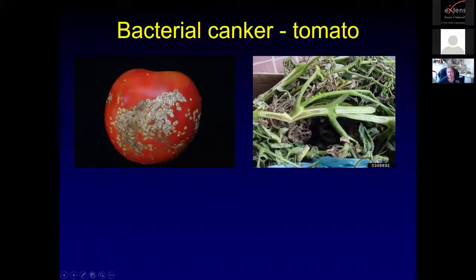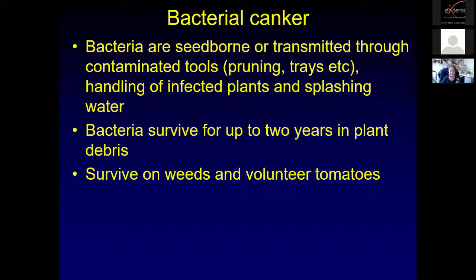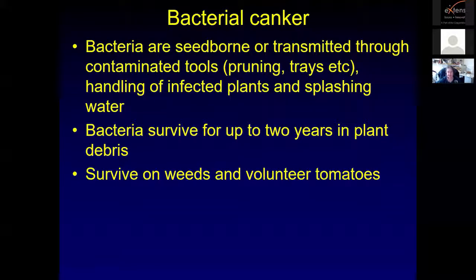On the right you can see symptoms in the tomato plant — that brown discoloration of the vascular tissue. What we usually see in Utah are the symptoms on the tomato fruit: white spots with a dark center, which is very characteristic for bacterial canker. Bacterial canker is also seed-borne, or it can be transmitted through contaminated pruning tools after handling infected plants, or by splashing water. These bacteria can survive up to two years in plant debris, so rotten fruit left in the field could be a source of infection when you plant tomatoes there again.